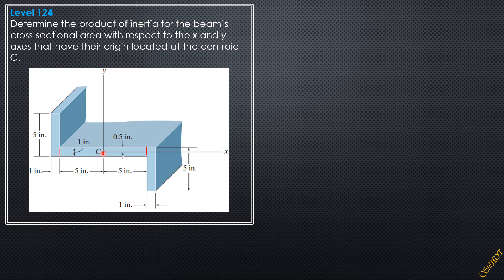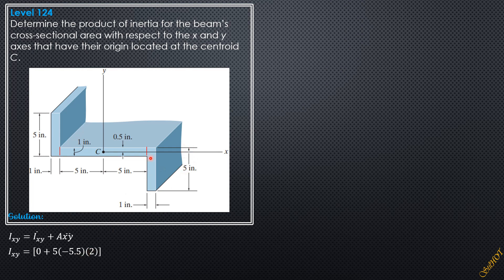For our solution, Ixy equals the sum using the transfer formula: Ixy = Ī_xy + A·x̄·ȳ. For the first rectangle: centroidal product of inertia is zero, area is 5, x̄ is negative 5.5, ȳ is positive 2. For the second rectangle: centroidal product of inertia is also zero, area is 5, x̄ is positive 5.5, and ȳ is negative 2. So Ixy = 0 + 5(−5.5)(2) + 0 + 5(5.5)(−2), giving Ixy = −110.0 in⁴.